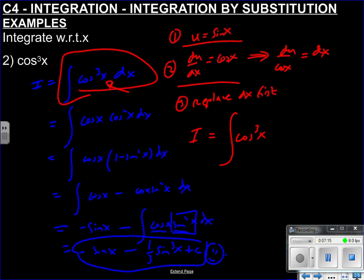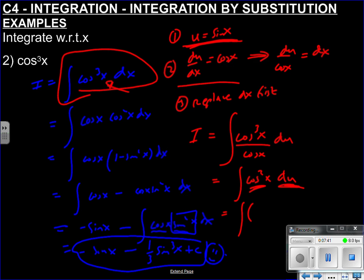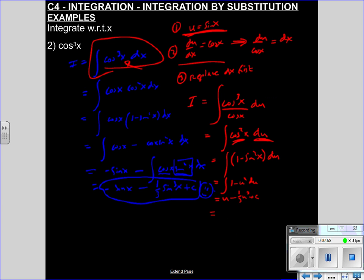Replace dx first: our integral becomes cos cubed x times du over cos x. Notice cos cubed becomes cos squared — exactly what we wanted. But we still have something in terms of x, so we need to put it in terms of u. What is cos squared in terms of u? Since u is sin x, cos squared is 1 minus sin squared x, which is 1 minus u squared. So this becomes the integral of 1 minus u squared du — a C1 problem. That gives u minus a third u cubed plus c, which is sin x minus a third sin cubed x plus c.